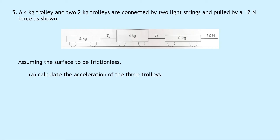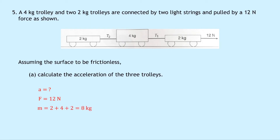Question five says a four kilogram trolley and two two-kilogram trolleys are connected by two light strings and pulled by a 12 Newton force. We have tension T1 and tension T2 in the two strings respectively, with 12 Newtons pulling the whole system to the right on a frictionless surface. To find the acceleration of the three trolleys: the total mass is 2 plus 4 plus 2 equals eight kilograms. Using A equals F over M gives 12 divided by eight, which is 1.5 meters per second squared.